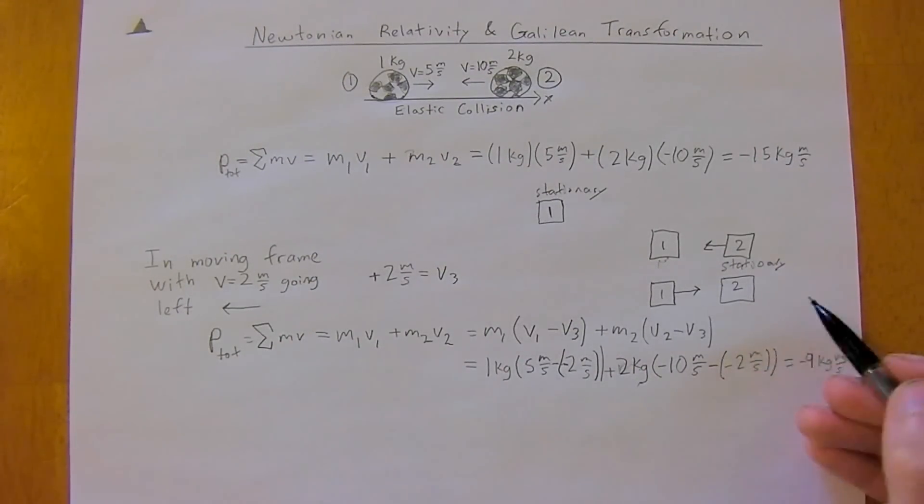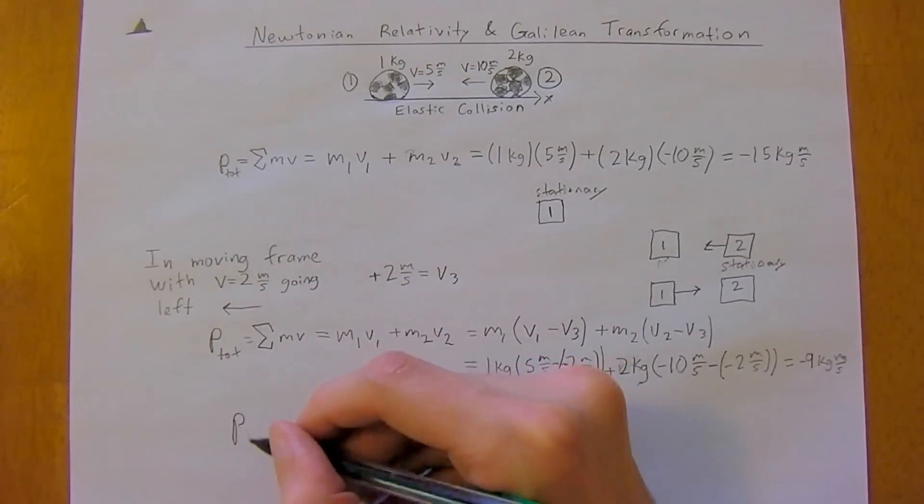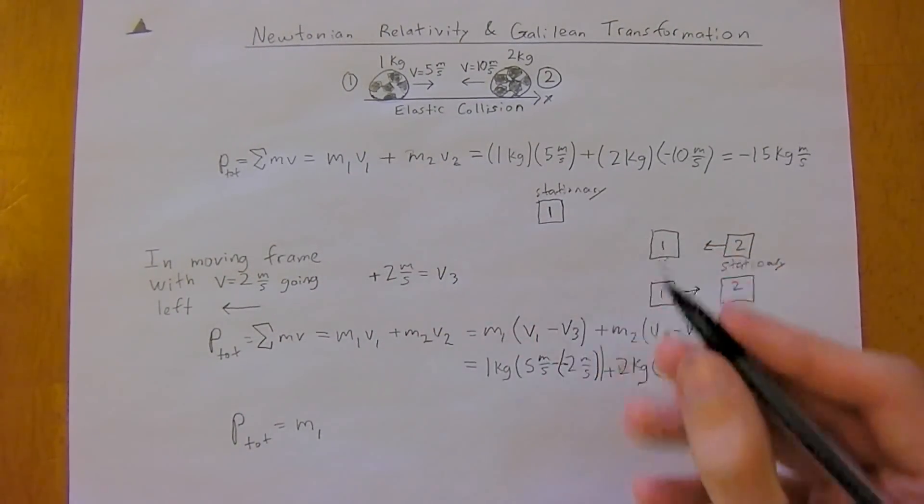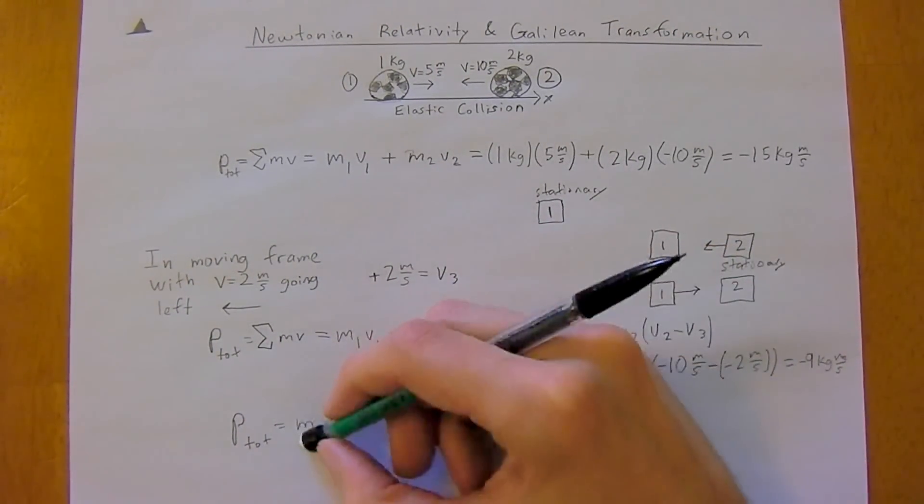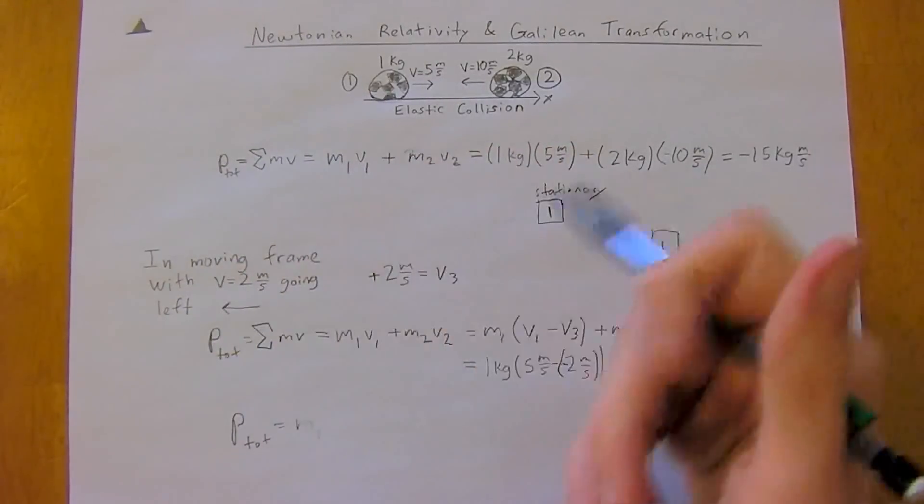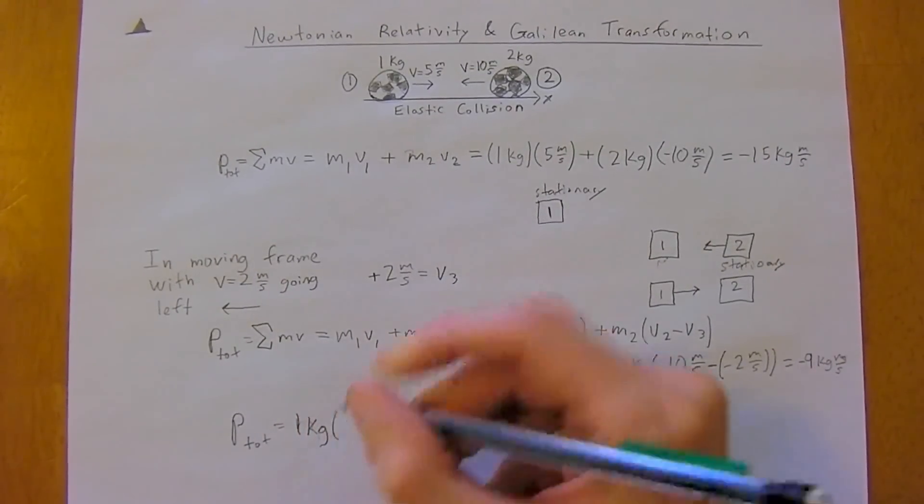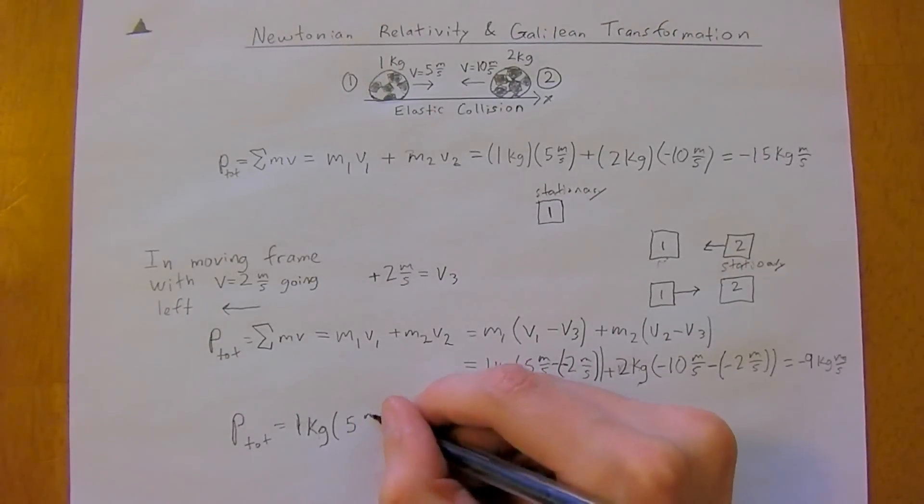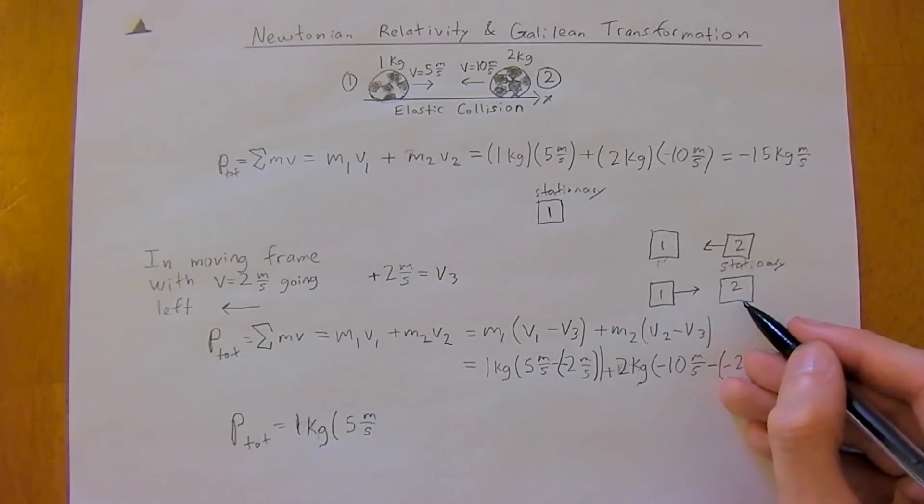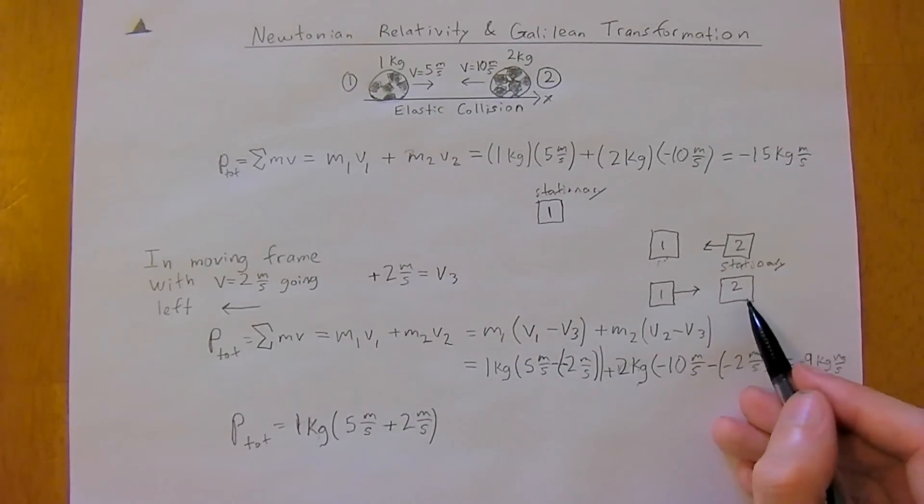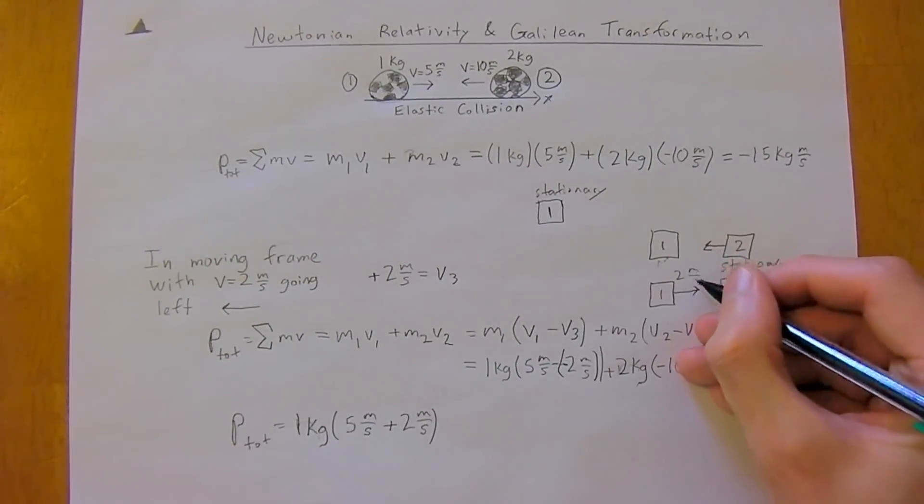And so another way, an easier way, I like to do this. Let's just say the p total is equal to m1. I'll just plug it in. It's the same as above, but just thinking about it differently. So 1 kilograms times 5 meters per second. And we're in this frame, so actually, we're just going to add 2 meters per second. Because really, in this frame, frame 1 is approaching us with a positive velocity, since it's going to the right.